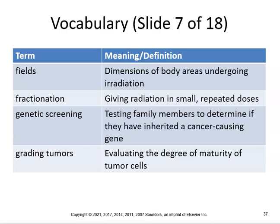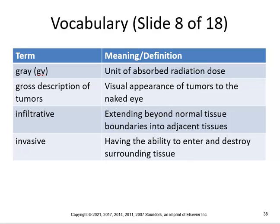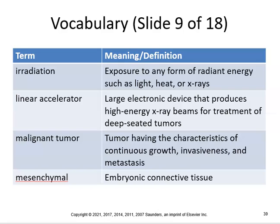Fields are the dimensions of body areas undergoing irradiation. Fractionation is giving radiation in small repeated doses. Genetic screening is testing family members to determine if they have inherited a cancer-causing gene. Grading tumors evaluates the degree of maturity of tumor cells. Gray (Gy) is a unit of absorbed radiation dose. Gross description of tumors refers to the visual appearance visible to the naked eye. Infiltrate means extending beyond normal tissue boundaries into adjacent tissues. Invasive means having the ability to enter and destroy surrounding tissue.